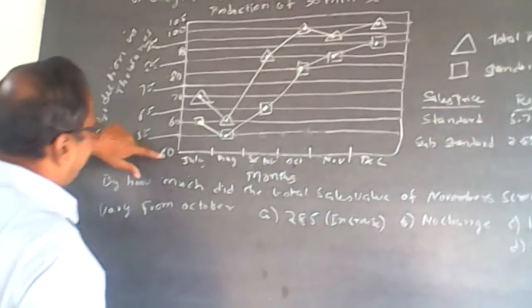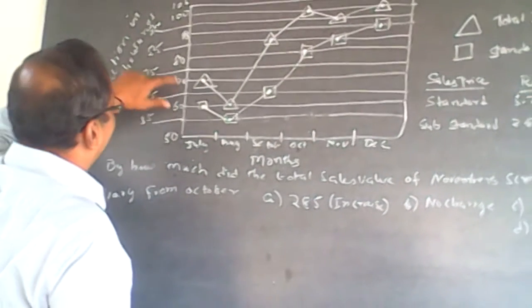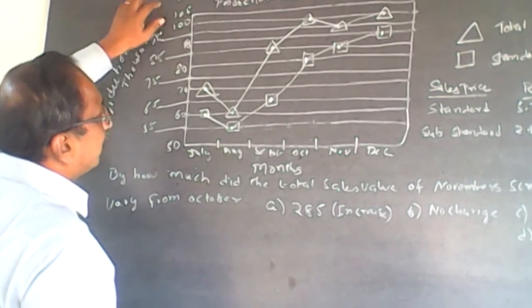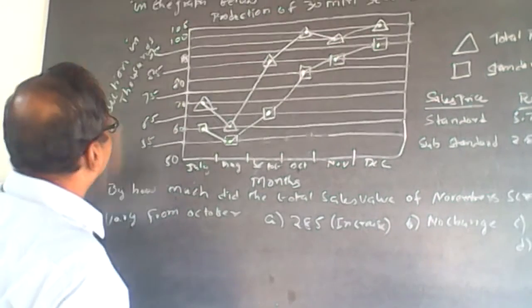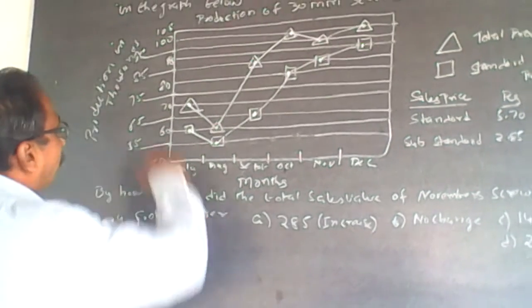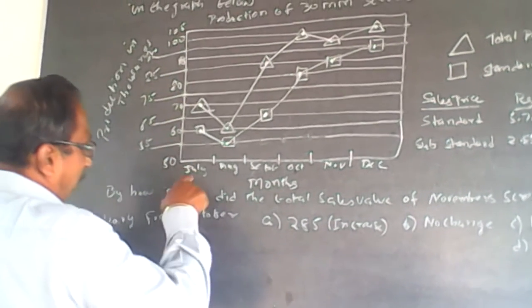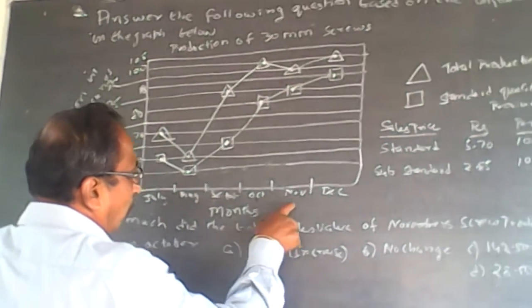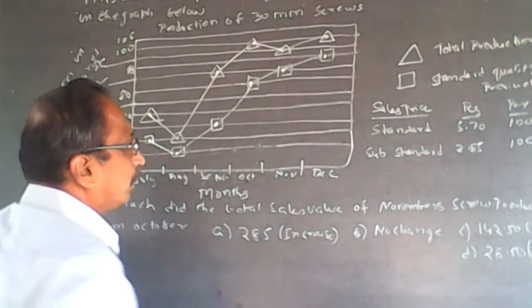The scale shows values 50, 60, 70, 80, 90, 100 in thousands. The months along the horizontal axis are July, August, September, October, November, and December.